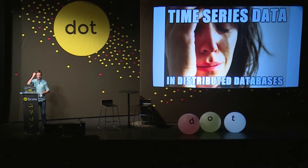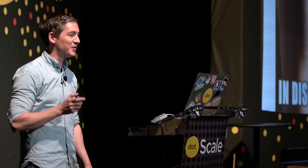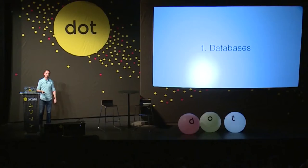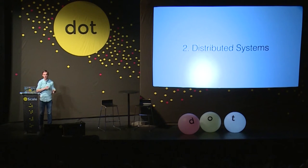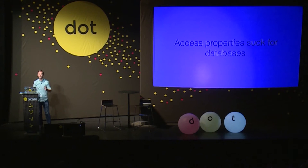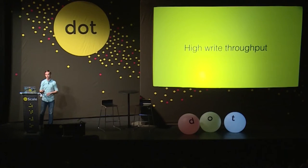Time series data often makes me feel a certain way, and there are two parts to this. The first part is the database piece, and the second is distributed systems. I separate those out because time series data is horrible for these two different pieces for different reasons. So here's why time series data is really sucky for databases. First is high write throughput.